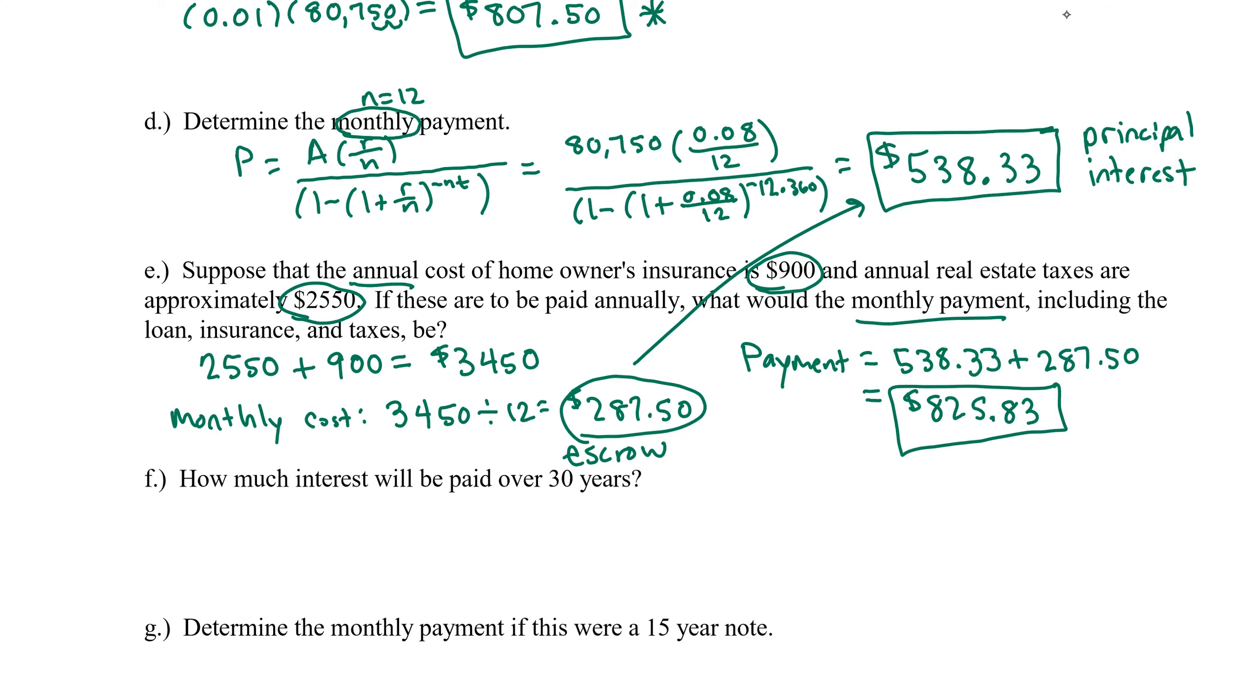That amount would not change month to month. How it is allotted does change month to month. So I'm going to write a check or I'm going to have an automatic draft of $825.83 coming out of my bank account every month. $287.50 of that is going to be separated and put into the escrow account and saved up so that when these two bills come due, we have the funds there to pay them.